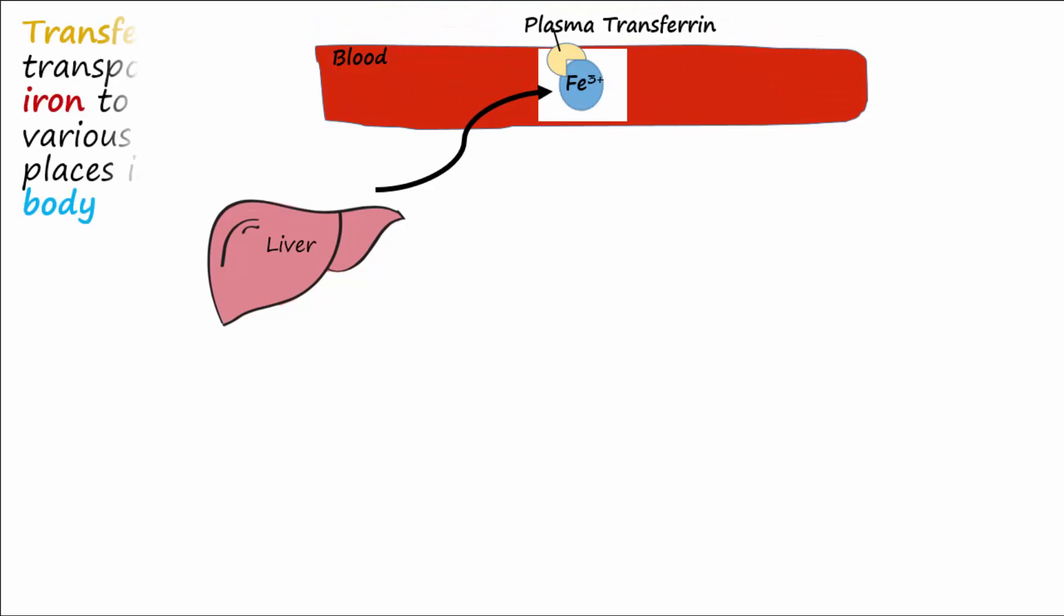As mentioned previously, the liver makes transferrin and secretes it into the plasma. Fe3+ loads onto plasma transferrin after it leaves the enterocytes or macrophages of the spleen.